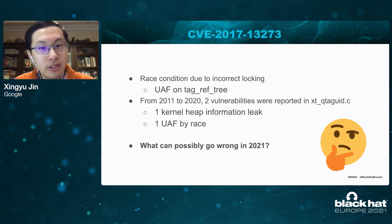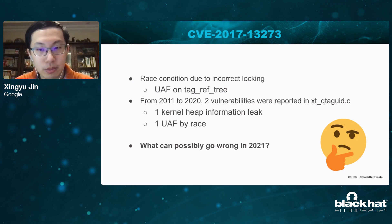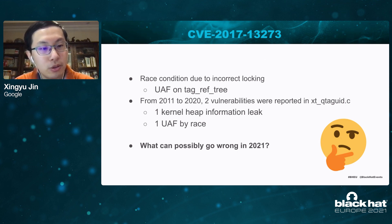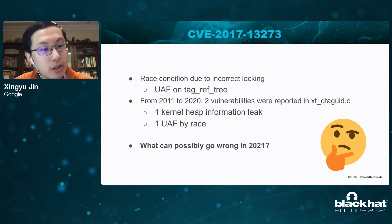The other vulnerability is a use-after-free on tag_ref tree via race condition due to improper locking. From 2011 to 2020, there were only two vulnerabilities in this module, and the module was replaced by eBPF. So what can possibly go wrong in 2021?